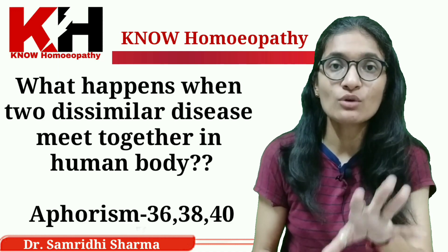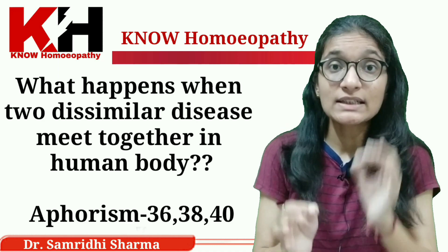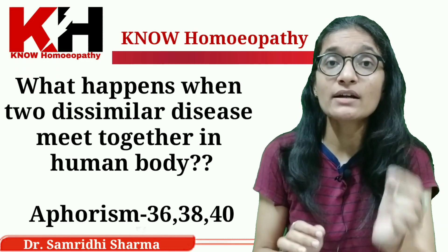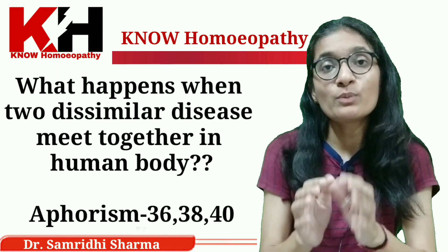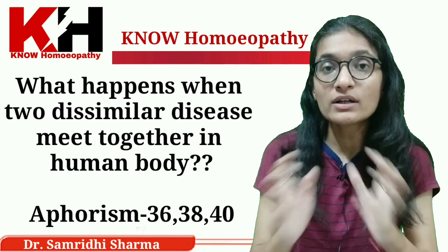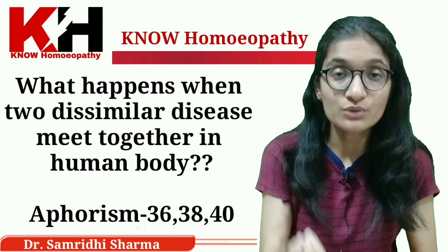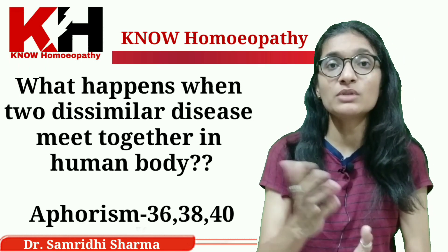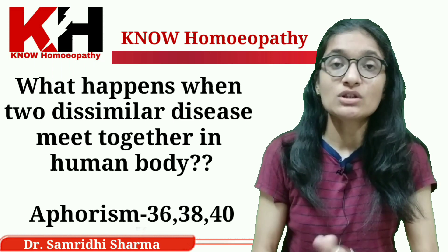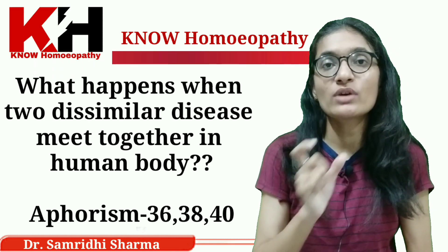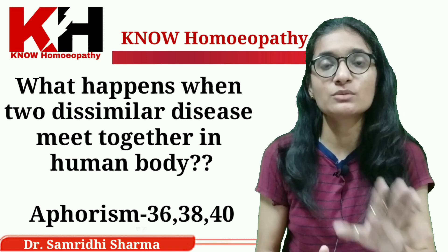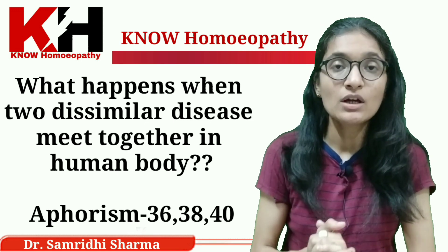Complex disease forms when the new disease is of equal strength to the old disease and both are of chronic character — both occupy a particular part of the body and run their course to form a complex disease. You have to remember Aphorism numbers 36, 38, and 40 for these three possibilities.